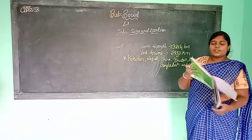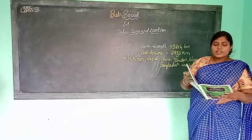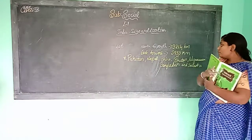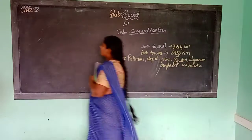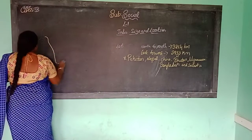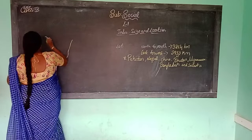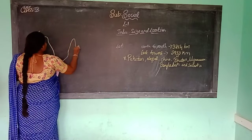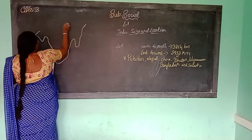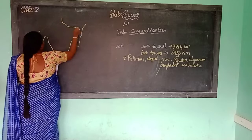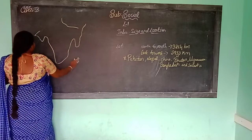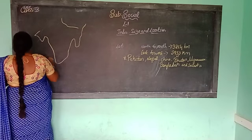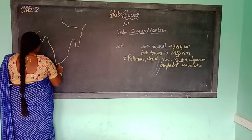Now, physical features. India is surrounded by 3 water bodies. India is surrounded by 3 water bodies.